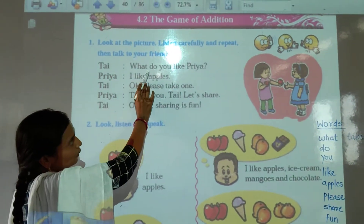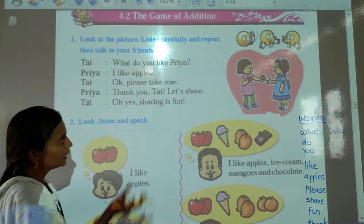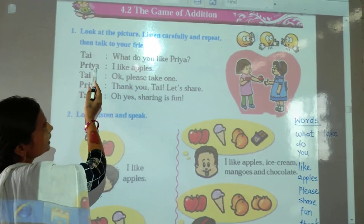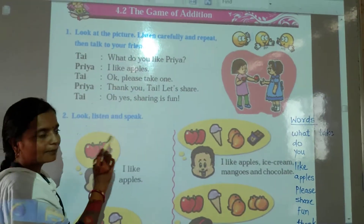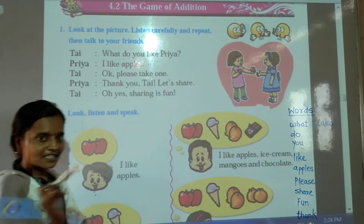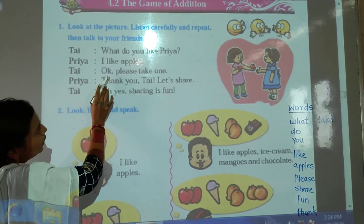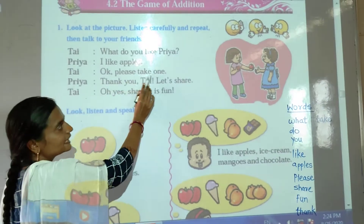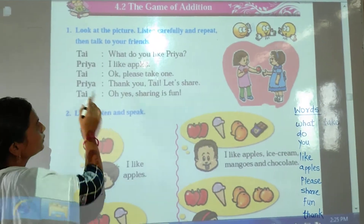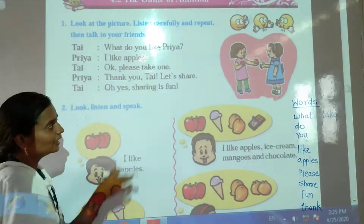Thai says, what do you like Priya? Priya says, I like apples. Thai says, okay, please take one. Priya says, thank you.